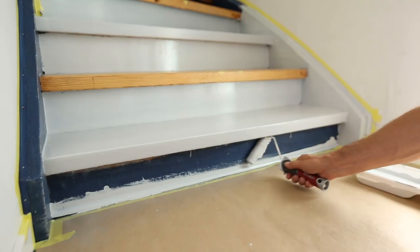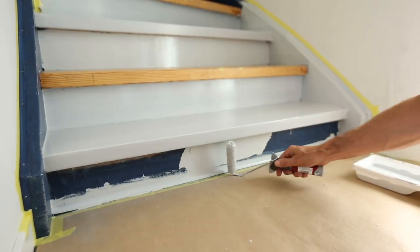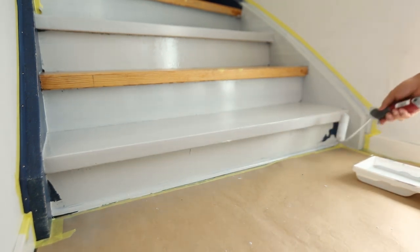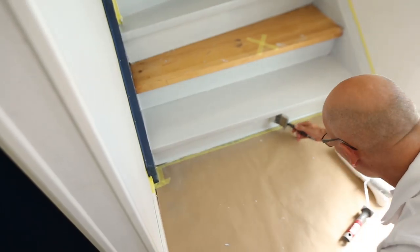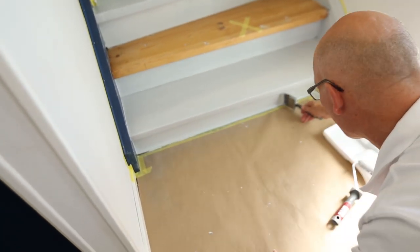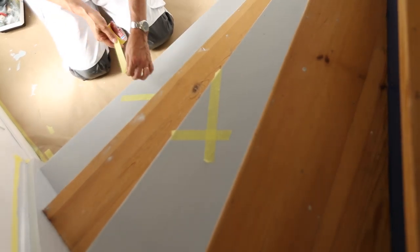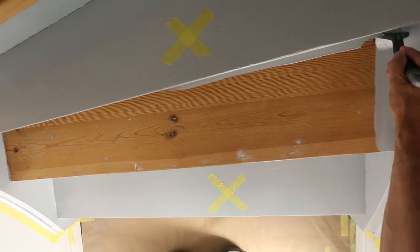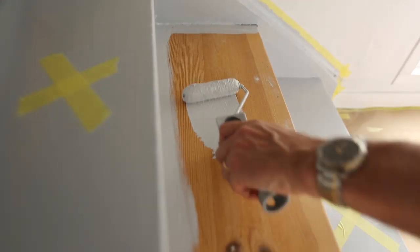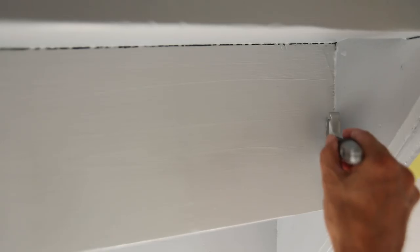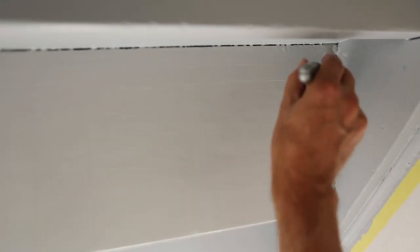This way you can still go up and down the stairs. When the paint is dried, remove the crosses and paint the remaining steps. Apply as many coats as recommended by the paint manufacturer.